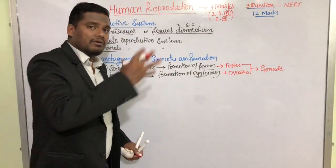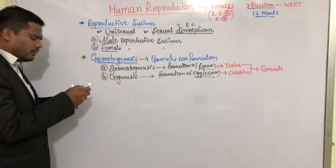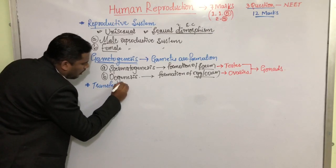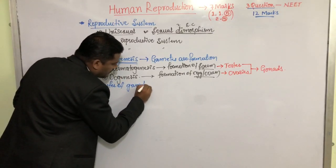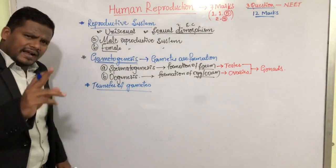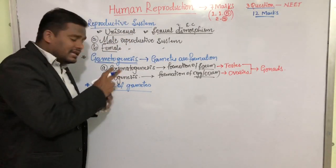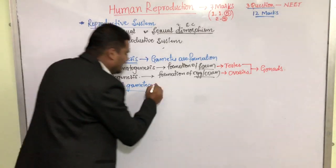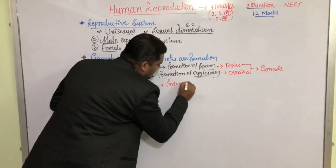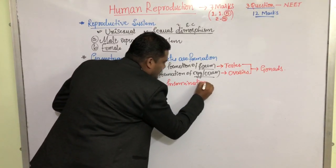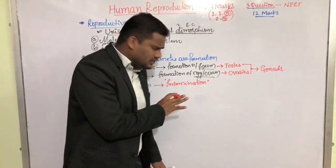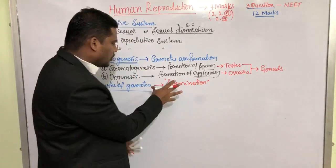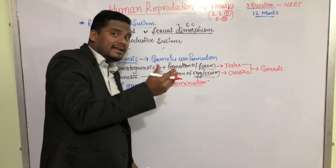The third thing we are going to study in this chapter is the transfer of gametes. The male gametes are motile; they get transferred from the male body towards the female body for fertilization. That process is generally called insemination. In case of human beings, insemination means the process of release of sperms into the female reproductive system by a male person.